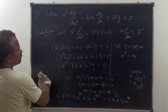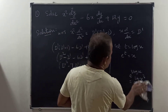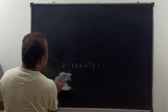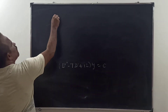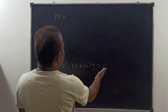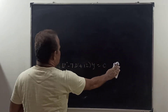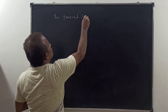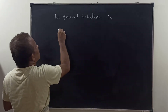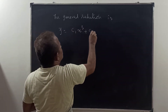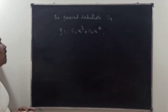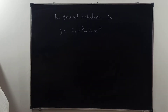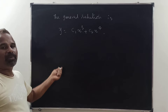The right-hand side of this equation is 0, so there is no particular integral. The complementary function is the general solution. Therefore, the required solution is y equals c₁ x³ plus c₂ x⁴.